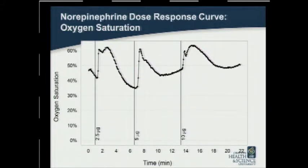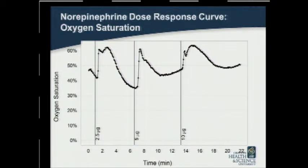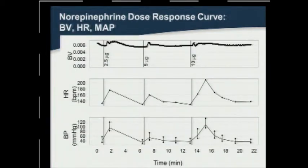When oxygen saturation is plotted over time, we see three peaks, each of which correlate temporally with norepinephrine administration. These three peaks reflect a mean increase in oxygen saturation of 46.7% from baseline measurements. This curve correlates with the measured blood volume fraction at the top, heart rate, and mean arterial pressure curve seen at the bottom.